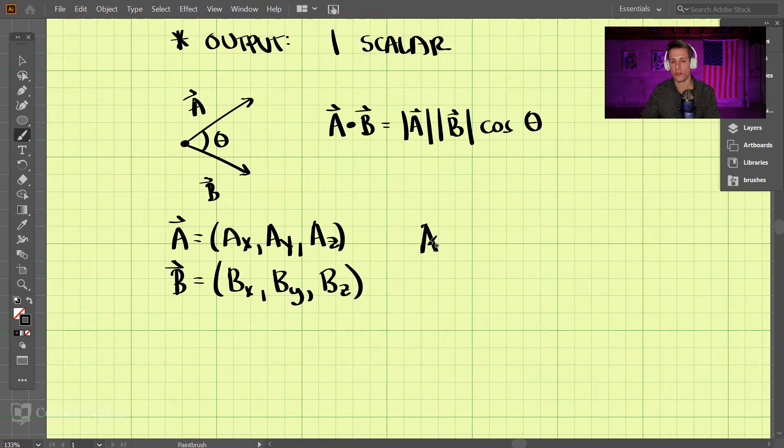We're looking to find A dot B. If we're given the vectors like this, we could do it, but it would be more difficult to find the magnitude of these two vectors first and the angle between them. So instead, we just use this equation.